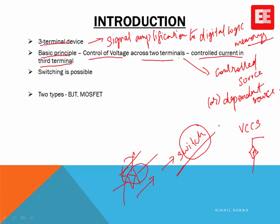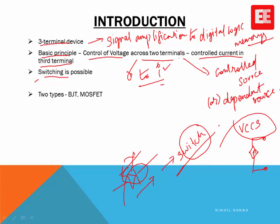We may have already come across this modeling of a controlled source during the small-signal analysis of BJT. In amplifier analysis, we use this controlled source model. And not only amplification — switching is also possible, because by controlling the voltage we can range the current in the third terminal from zero to some rated value. When the current is zero, it is an off switch; when it is non-zero, it is an on switch.